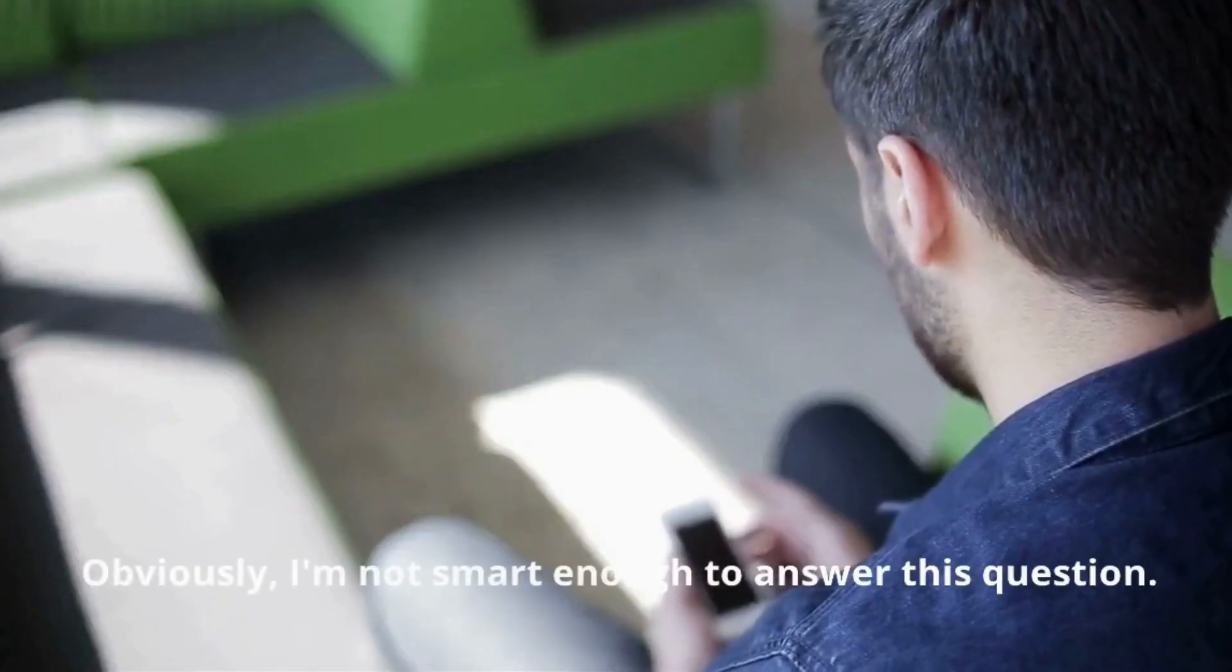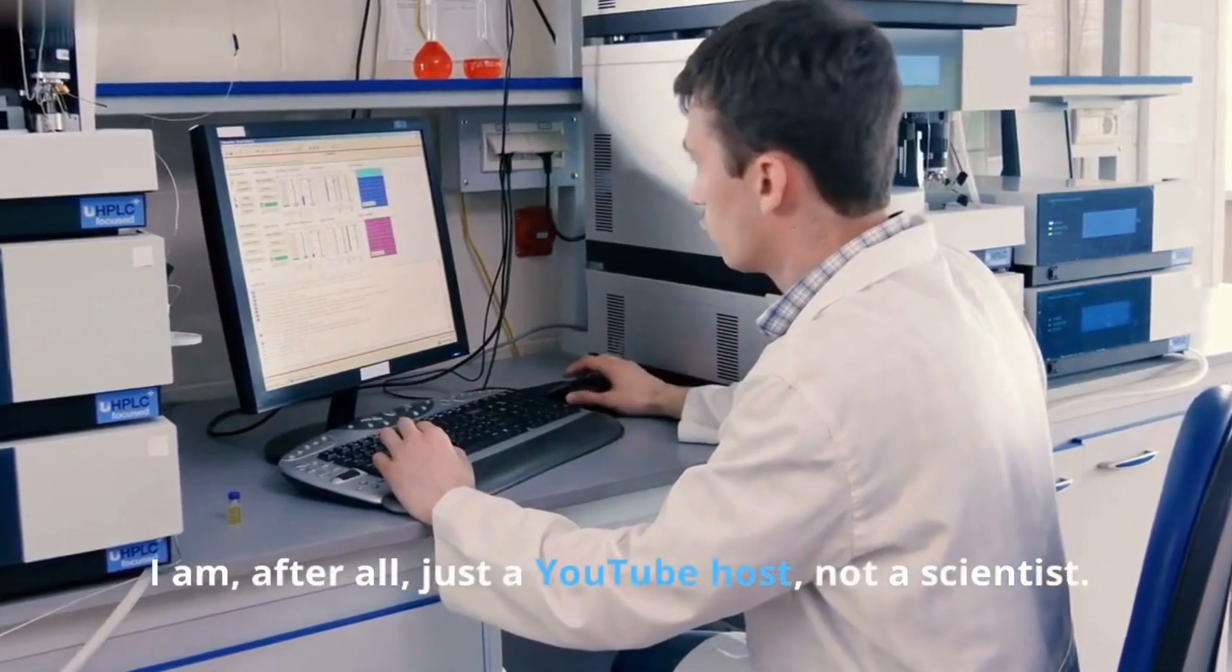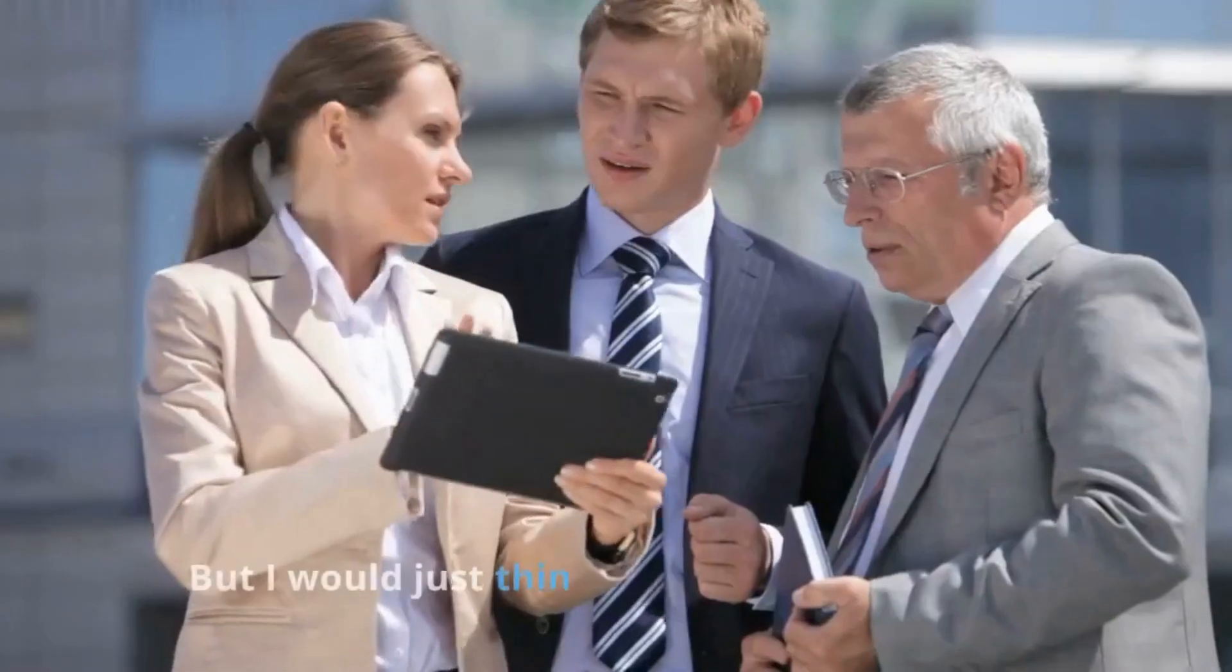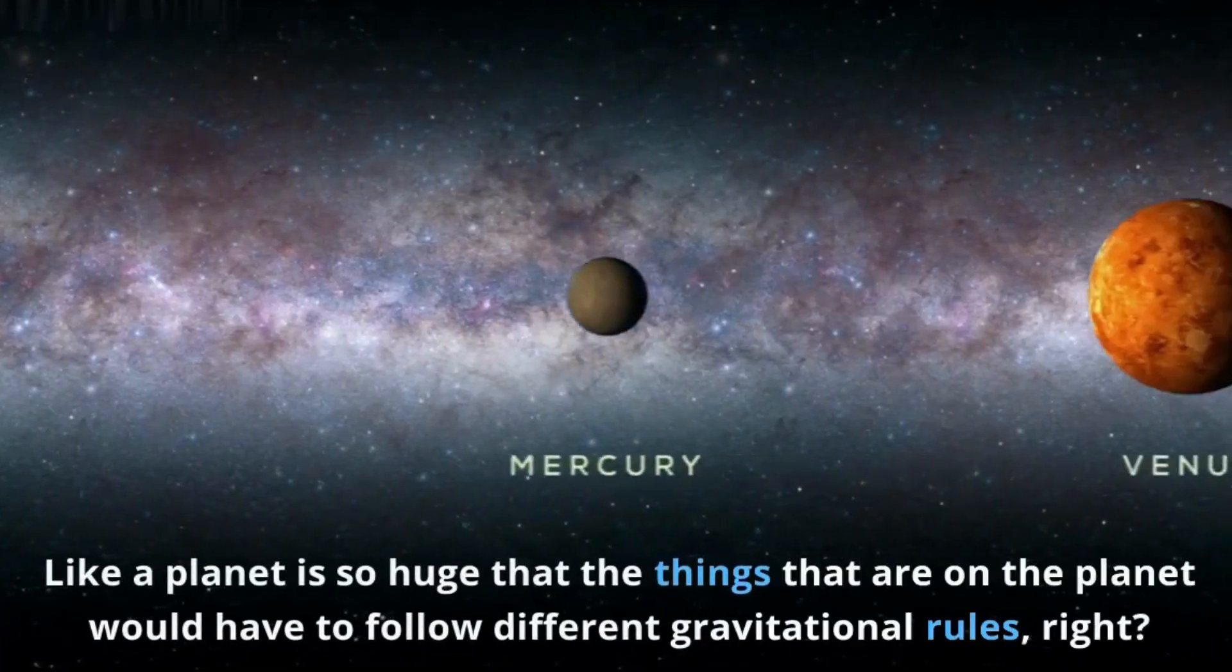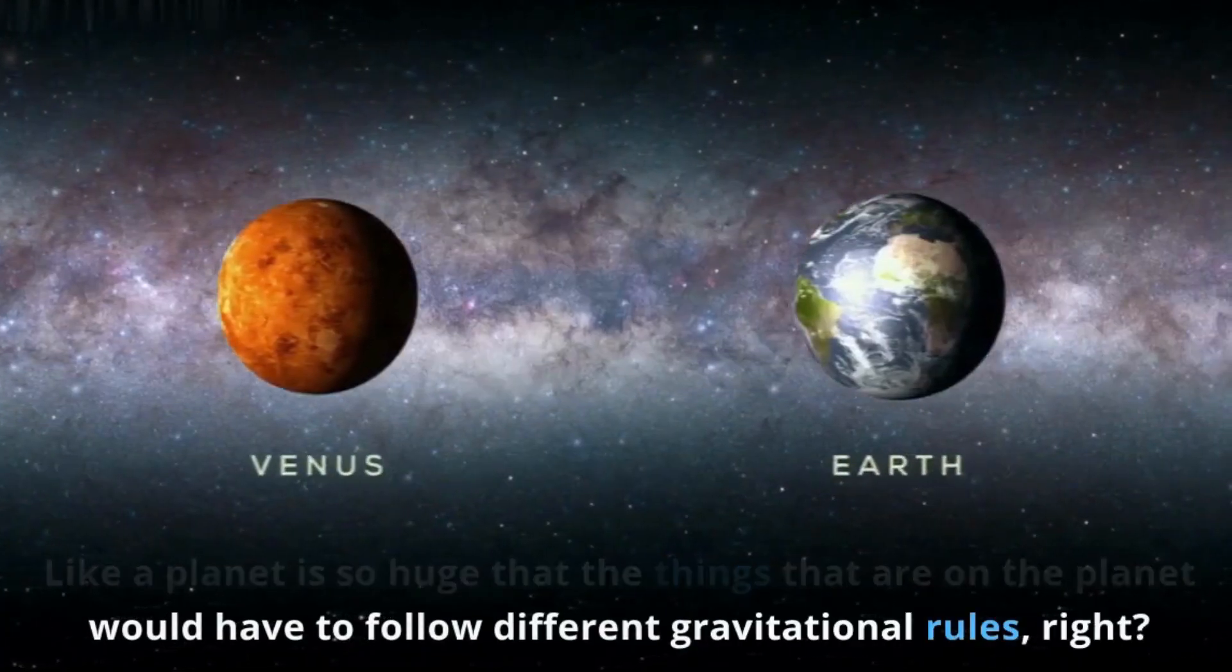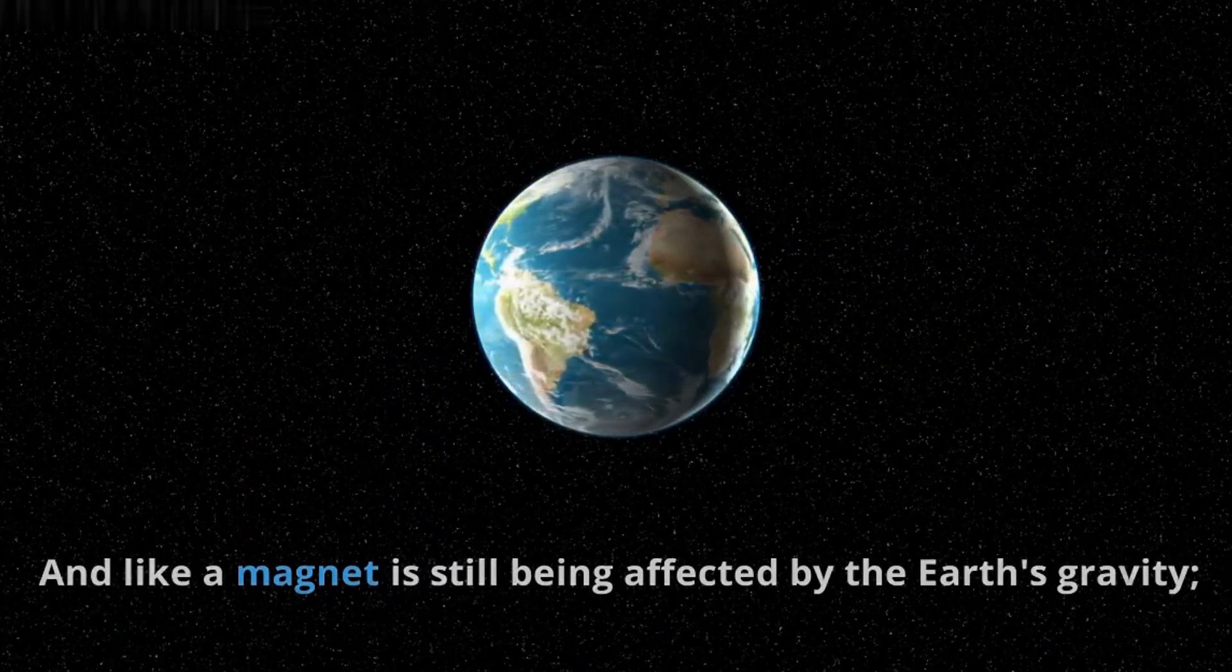Obviously, I'm not smart enough to answer this question. I am, after all, just a YouTube host, not a scientist. But I would just think it's all subjective, right? Like a planet is so huge that the things that are on the planet would have to follow different gravitational rules, right? And like a magnet is still being affected by the Earth's gravity.